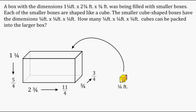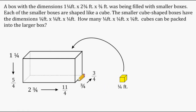If we put two boxes side by side, that would be two quarters; three boxes would be three quarters, and so forth. So we just have to stack boxes in each direction until we reach three quarters, then eleven quarters, then five quarters.